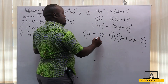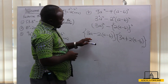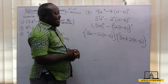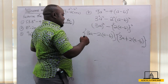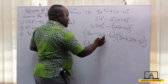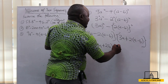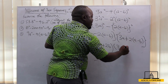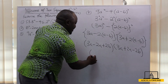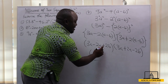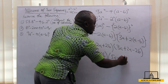We can't leave our answer this way; we need to simplify further by expanding the brackets. The first factor becomes 3a - 2a + 2b, which simplifies to a + 2b. The second factor becomes 3a + 2a - 2b, which simplifies to 5a - 2b. So our final factorized answer is (a + 2b)(5a - 2b).